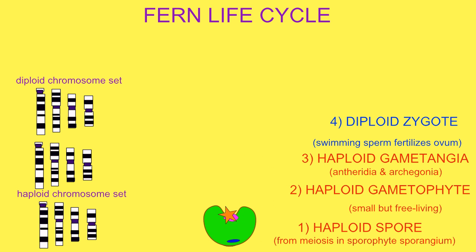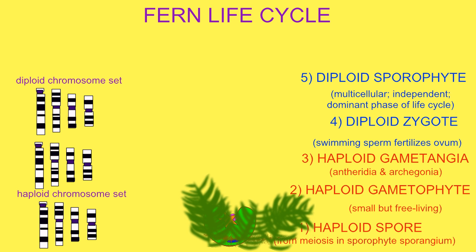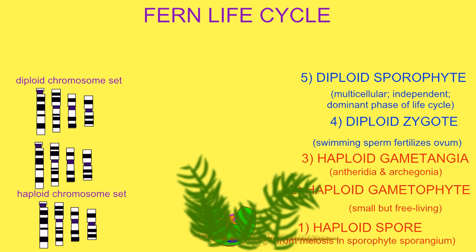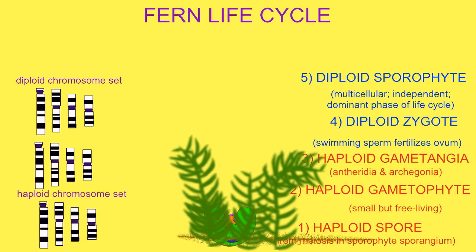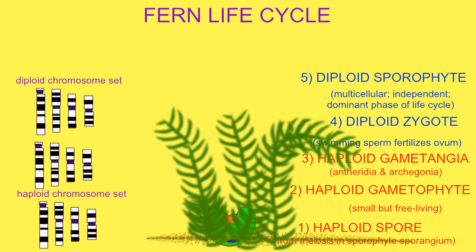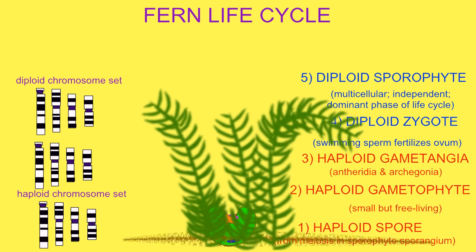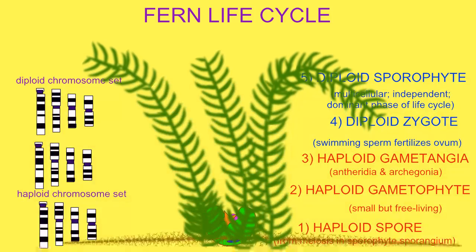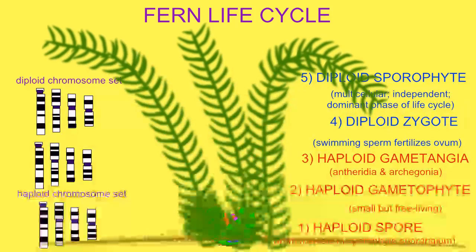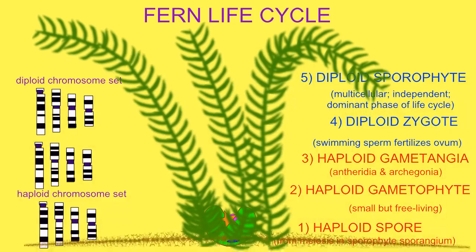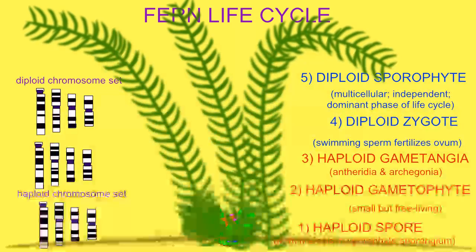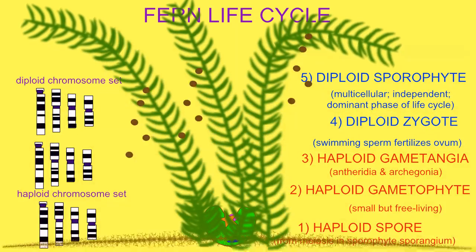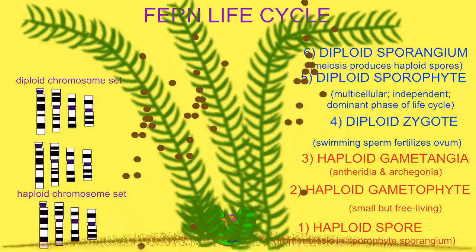This then forms a diploid zygote, the first cell of the sporophyte generation. The diploid zygote undergoes mitosis, producing an underground stem known as a rhizome, from which multiple leaves or fronds erupt. This is the recognizable fern, and it is the sporophyte generation, which is the dominant generation in the fern life cycle.